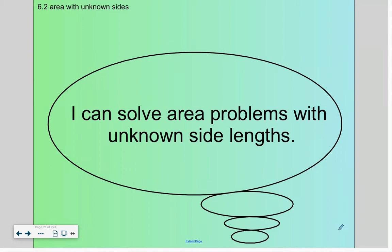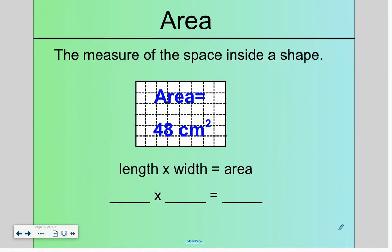Hello, today we are going to solve area problems with unknown side lengths. When we think about area, we're talking about the measure of the space inside a shape. If we know the length and we know the width, we can figure out the area.